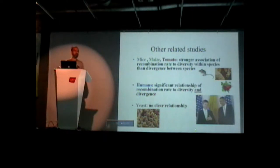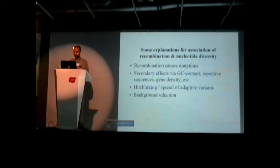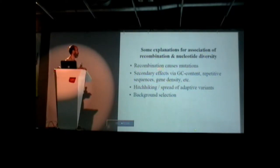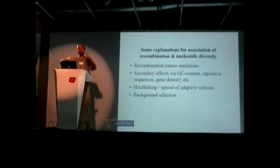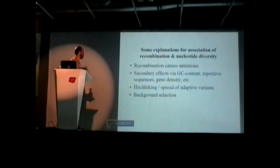It's very contradictory. So why the difference? It's a little puzzling. There are some explanations for why you might see this association between recombination and diversity. One is that recombination causes mutations — recombination involves double-strand breaks and repair, and maybe in the process of repair, you're introducing more mutations. You can have secondary effects with GC content or other things.